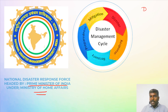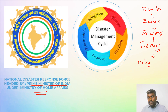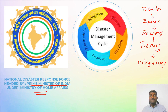During a disaster, what happens is we first try to respond immediately. Then after the response, you're going to do the recovery. Then you prepare ahead so that nothing like this happens again. And if unlikely it does happen, you'll be very prepared. And at last, you go for mitigation — meaning to avoid serious effects. If you're having a similar disaster, you avoid all the serious dangerous things that occurred in the previous disaster. That is called mitigation.